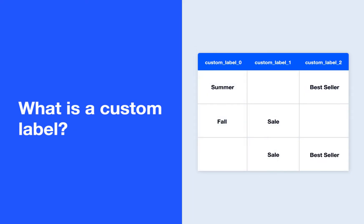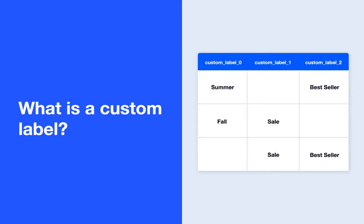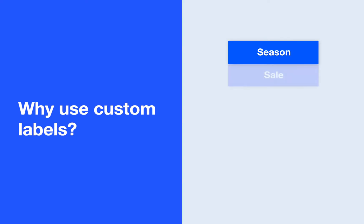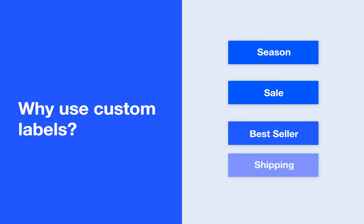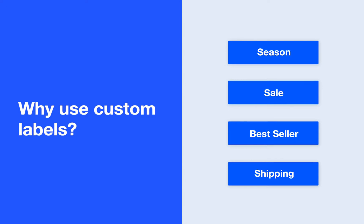A custom label is a feed attribute that you can use to filter products into groups by any criteria you choose. Custom labels are only for your use and don't appear to customers. They also allow for more flexibility within a structured framework. With custom labels, you can segment your products into various groups based on similar attributes and adjust your bid strategy accordingly. This additional segmentation also allows you to review performance more granularly and uncover trends and insights.